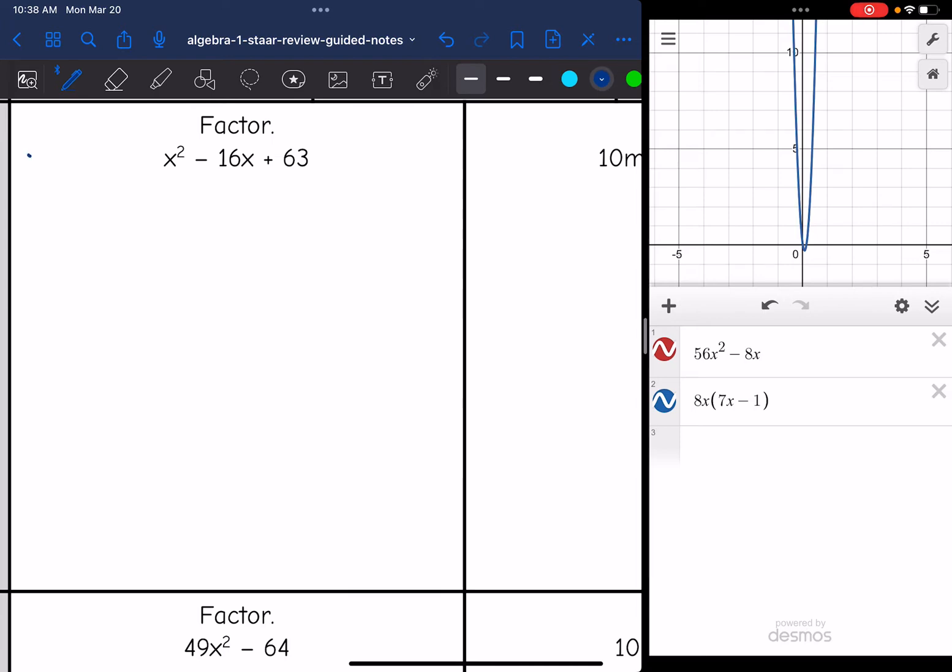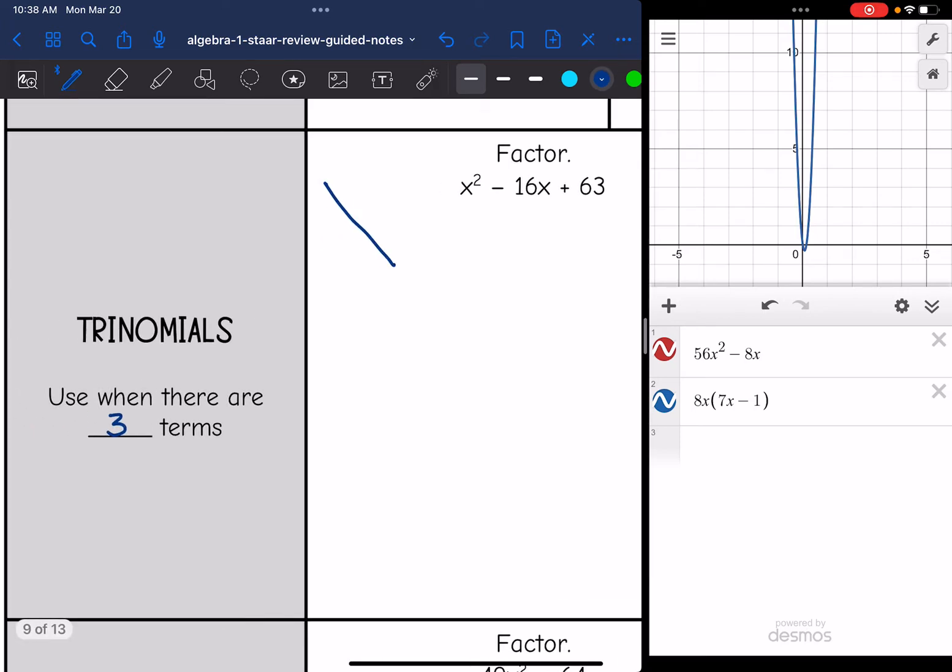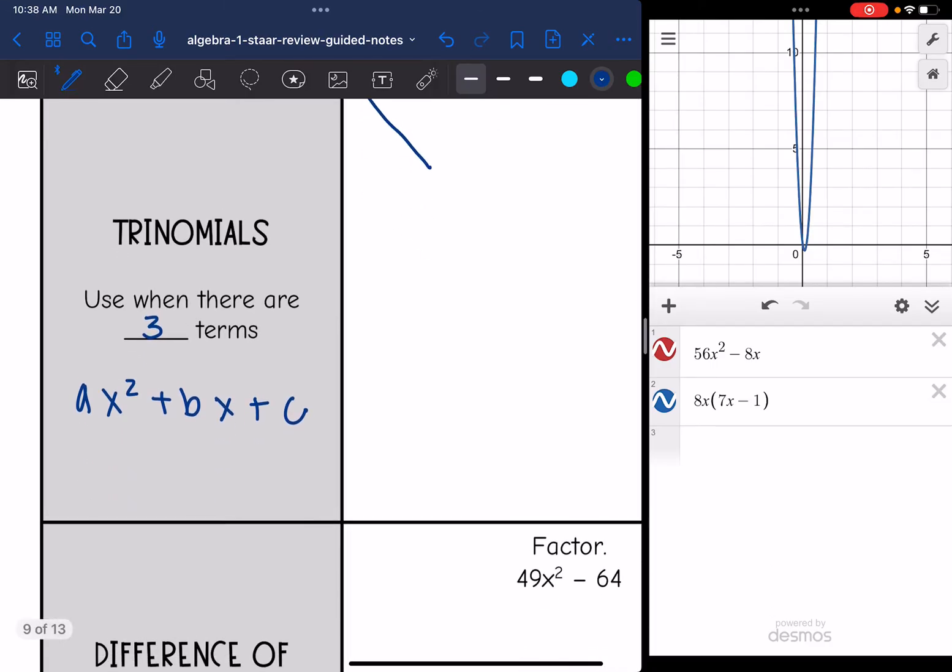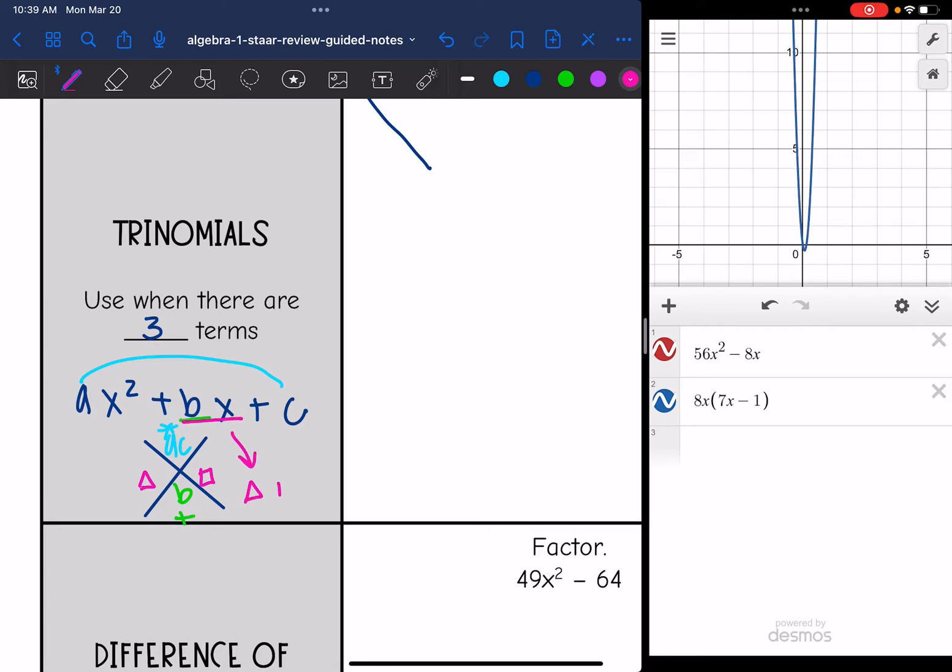So remember, you need your trinomial to be in standard form, which is ax squared plus bx plus c. And we use the x to help us find those magic numbers. We put a times c up top, and that was the number that we multiplied to. And then we put b at the bottom, and that was the number that we added to. And then you're going to get your two magic numbers, and that will be what you split your bx term up into.